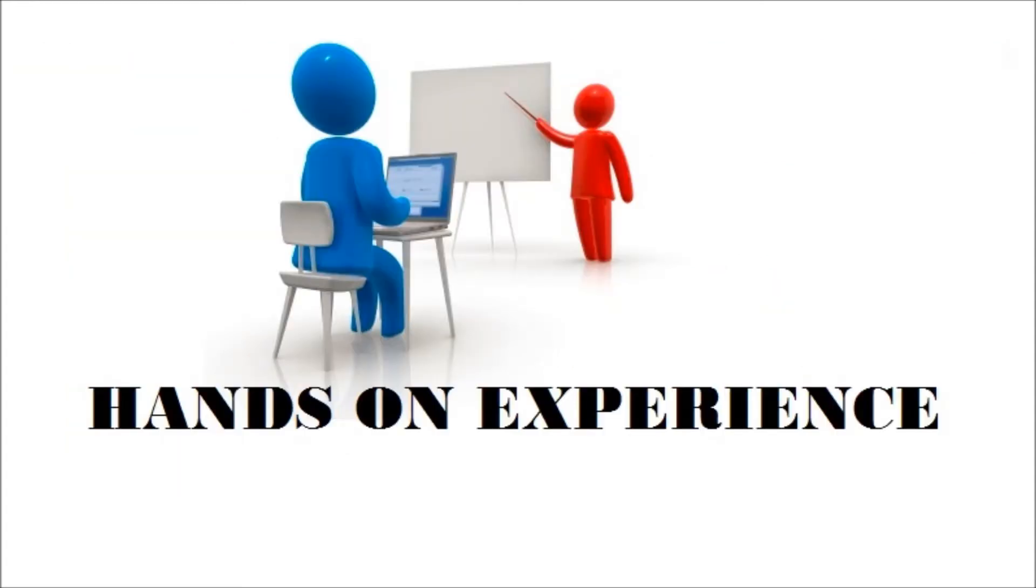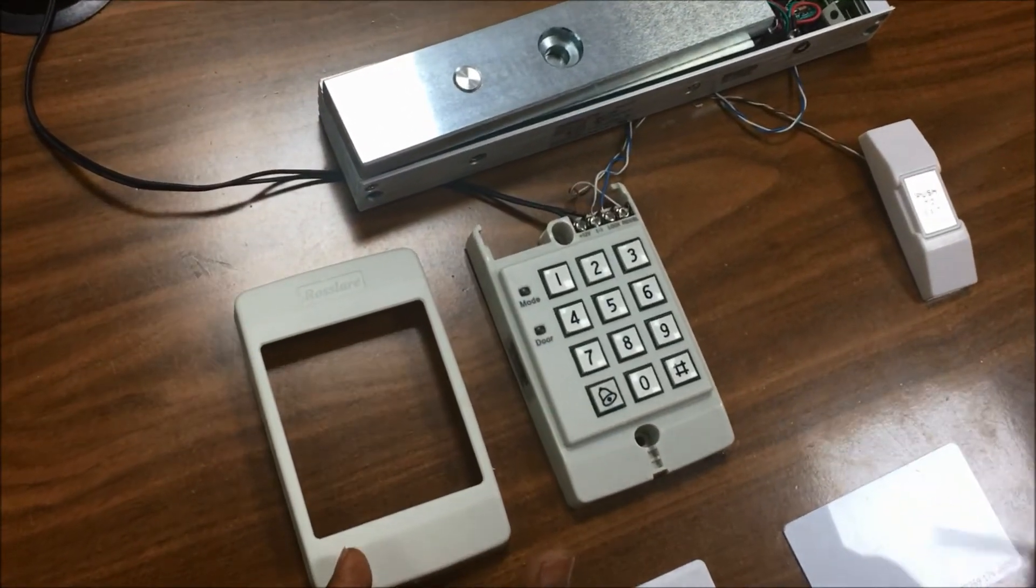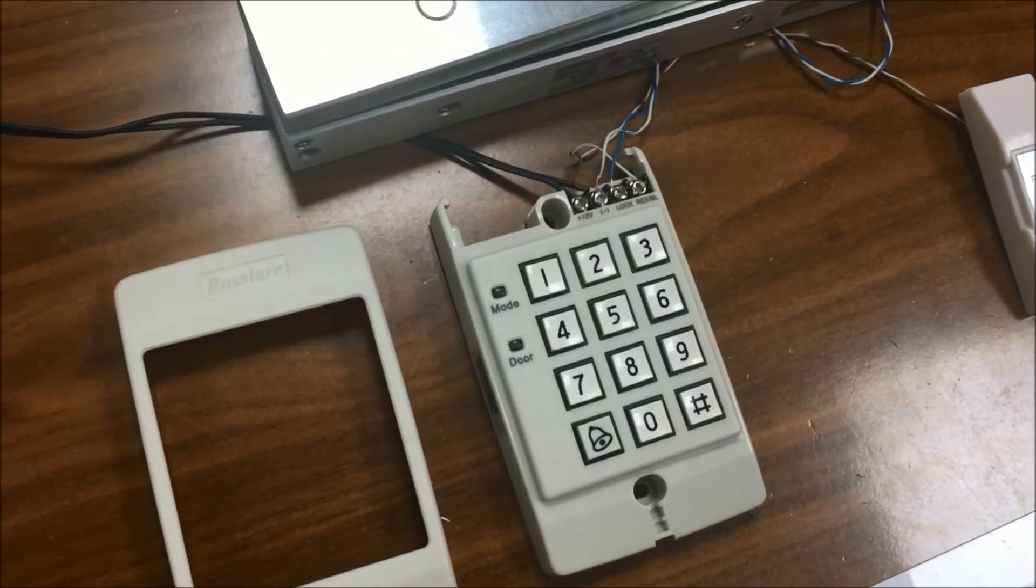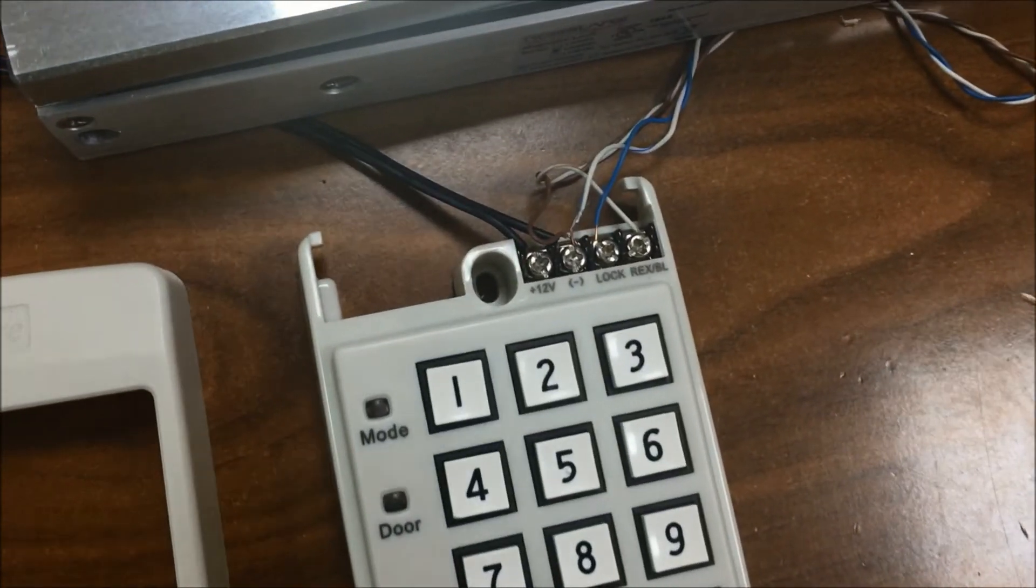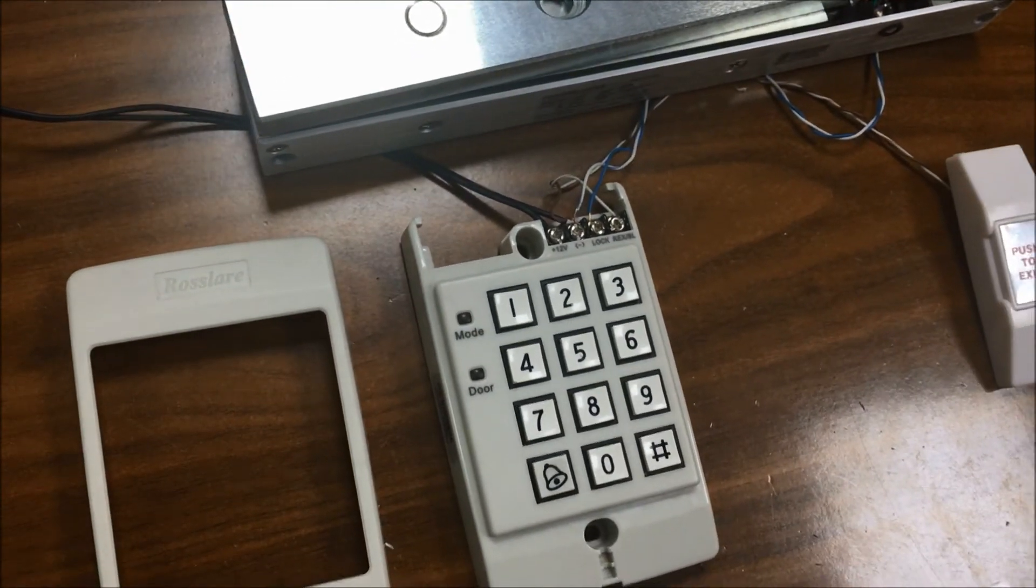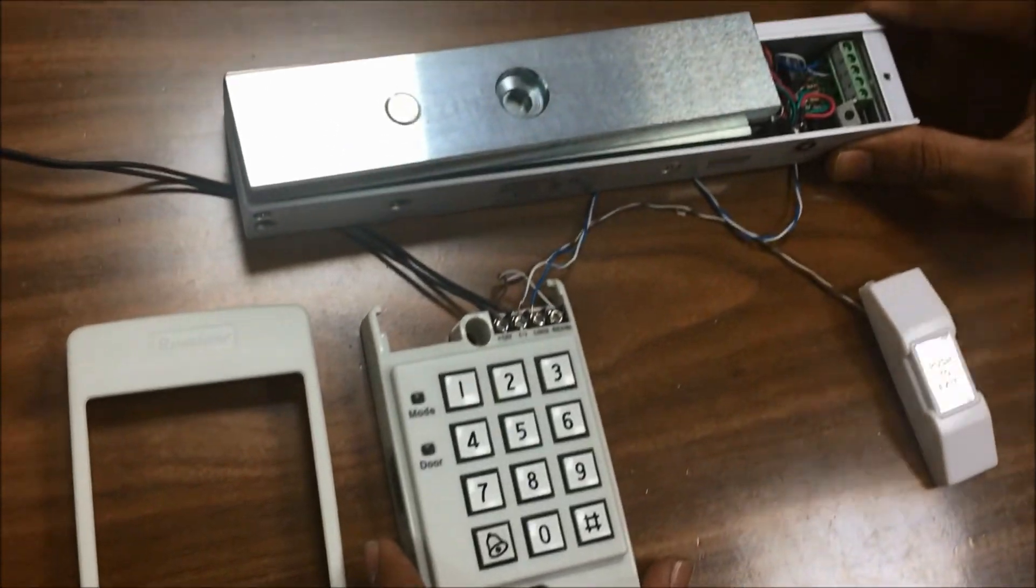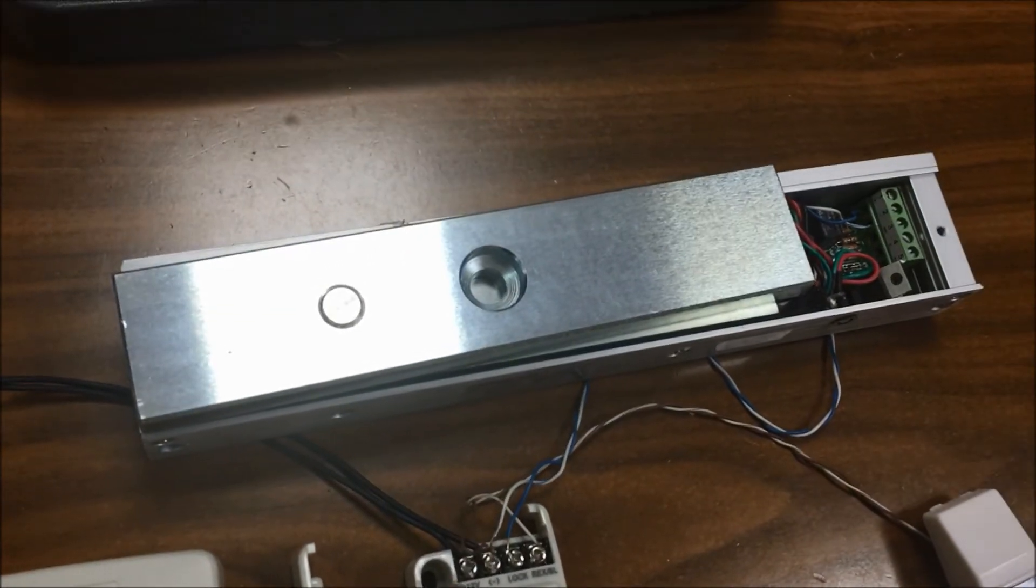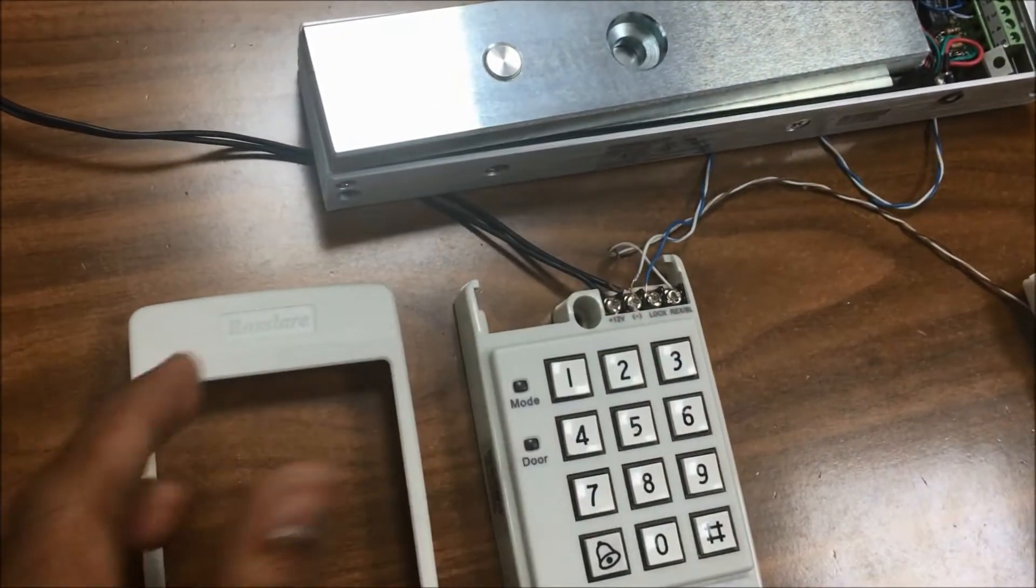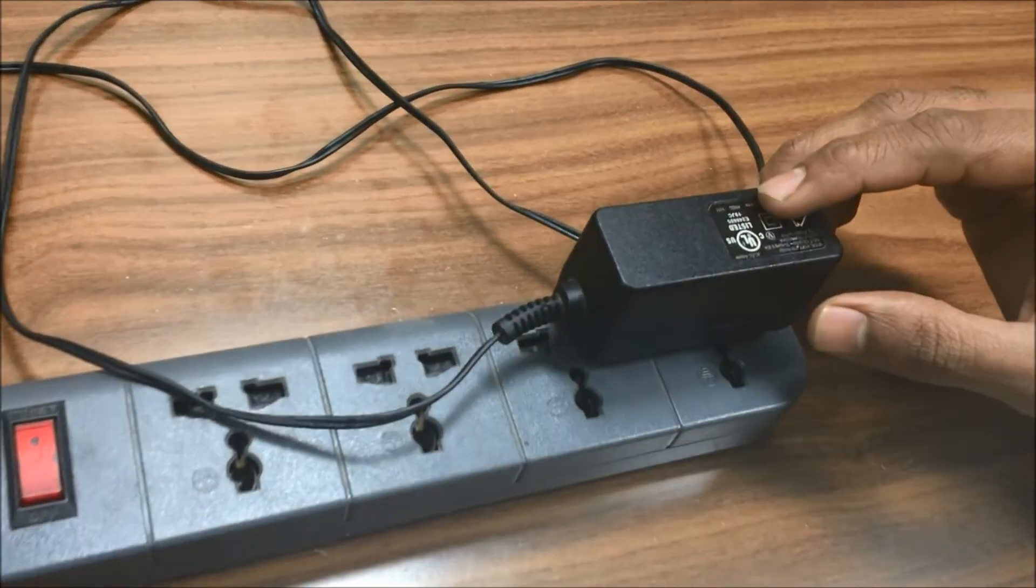Let's have a hands-on experience with Rosslayer's ACD32 for its working and connections. This is the ACD32 standalone controller which can be used with proximity card or password. 500 cards or passwords can be enrolled. This is the LOCK 600 LBPS which is connected to ACD32. We are connecting a 12V 2A power supply to ACD32.